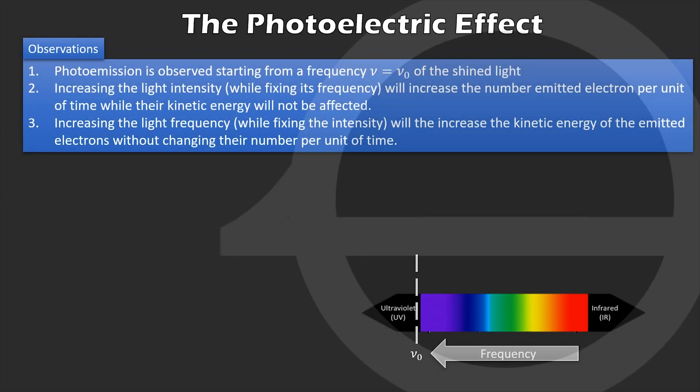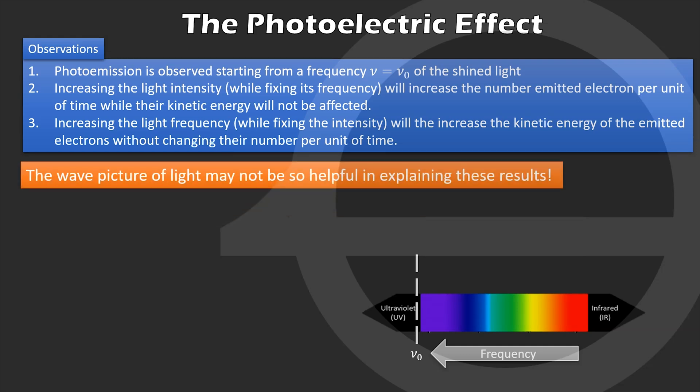These results we obtained were very confusing to physicists at that time, where the wave theory of light was highly adopted. It wasn't clear how light waves could explain these results, because that isn't how classical waves were supposed to work. So there was a necessity to find a new model of light to explain the photoelectric effect.